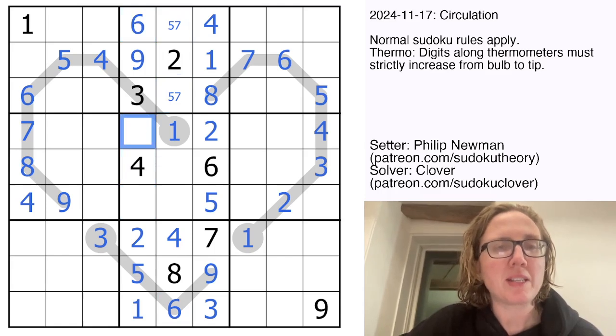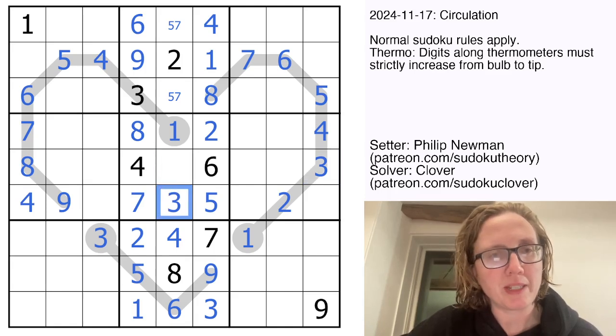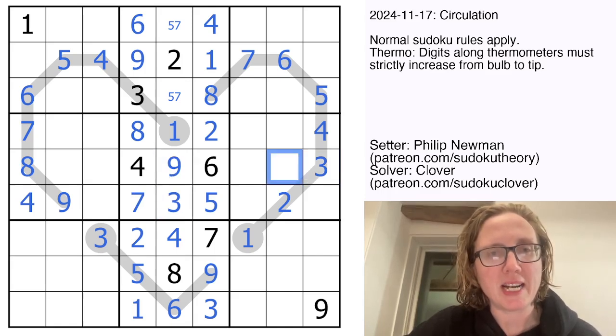My last two digits in this column will be seven and eight in that order and I still need to place a three. So three in this row so the three will go right there and I'm going to place a nine to finish off.